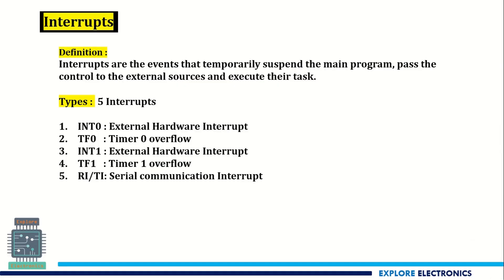First, what are interrupts? Interrupts are events that temporarily suspend the main program execution and pass control to an external source to execute its task. After completing that external source task, the controller regains control of the main program and main program execution continues.